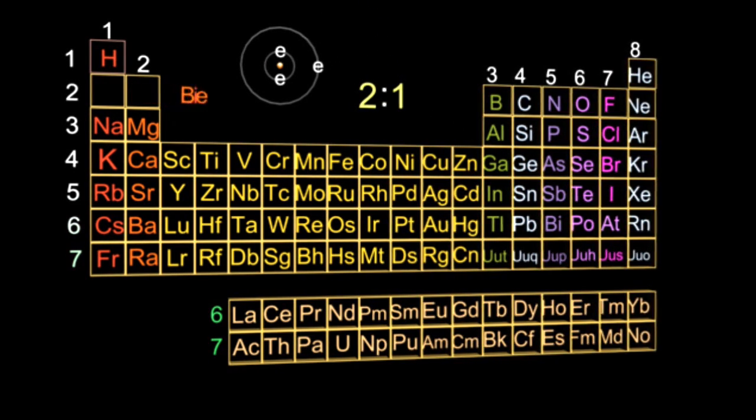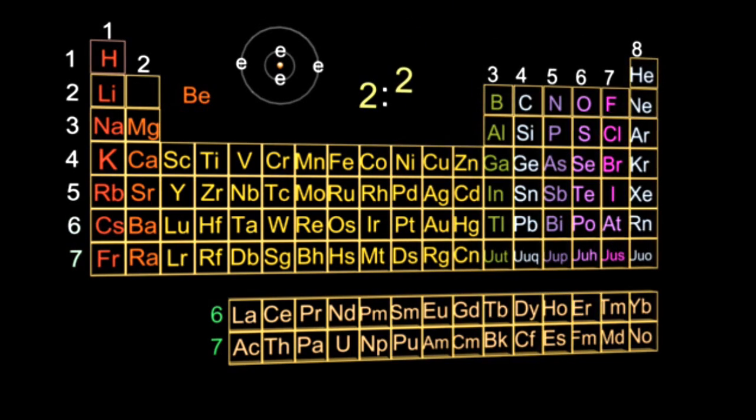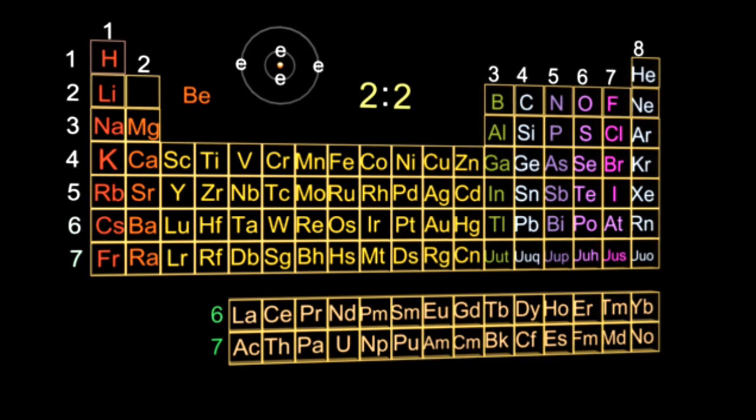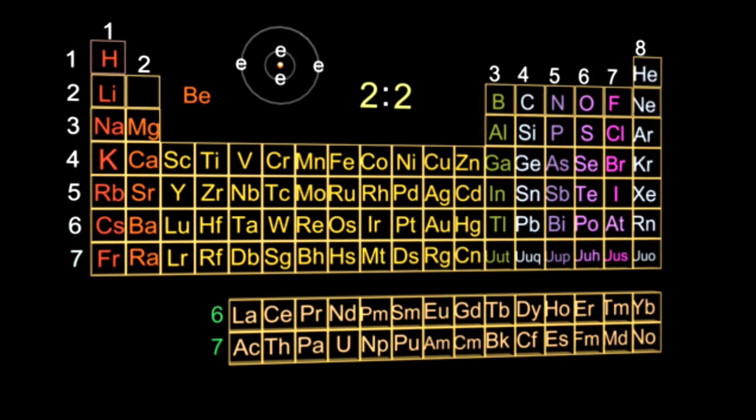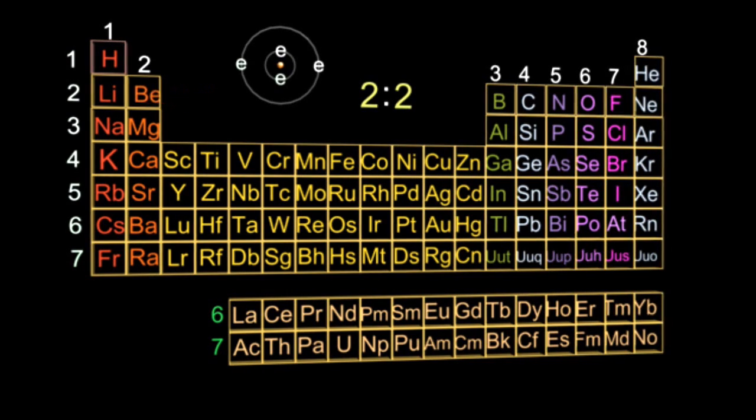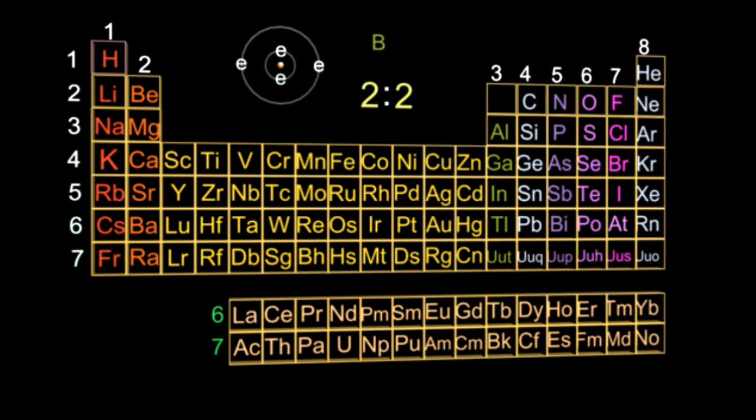Continuing on with beryllium, beryllium has an electronic arrangement of two, two. Boron, with five electrons in total, has an electronic arrangement of two, three.